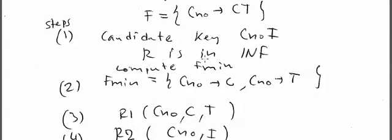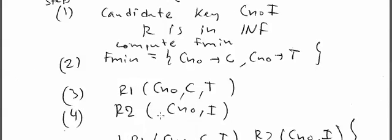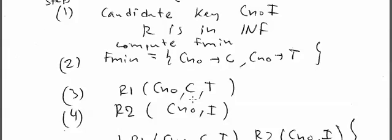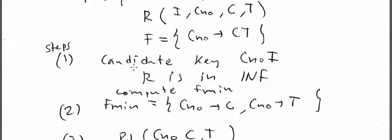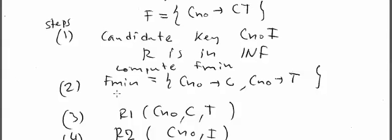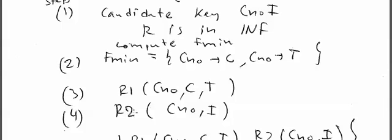Is the candidate key contained on the resulting tables? If it is, well done. But we see that it is not contained, then we make another table with the candidate key, which is the step number four, the C, N, I. And those are the four steps. So we get the keys, then we get the F min, and then from the F min we get the tables, and then on the step number four, if not one table contained the candidate key, we make an additional table.